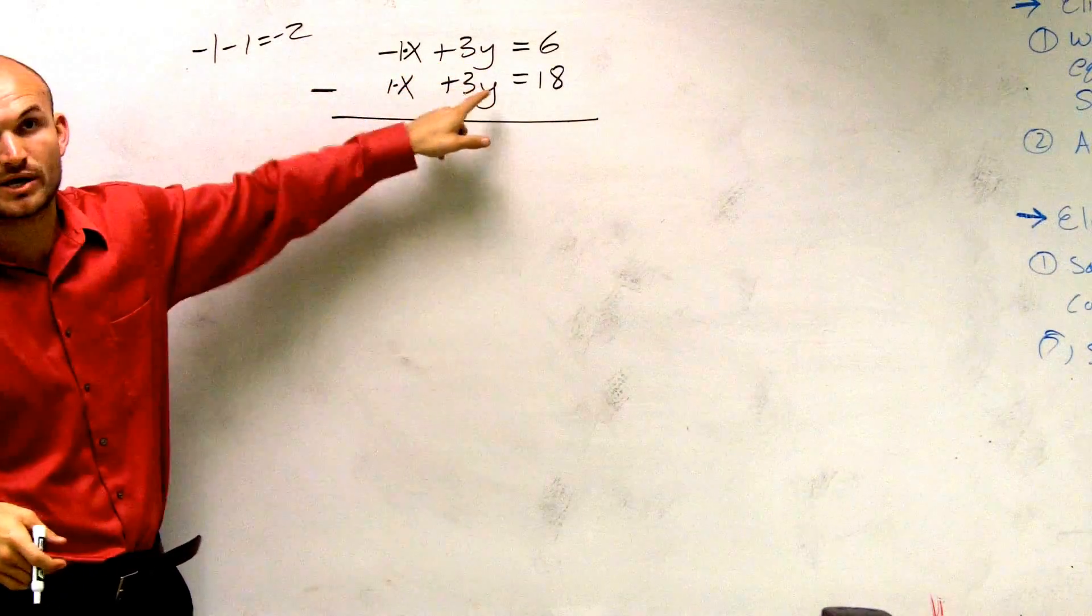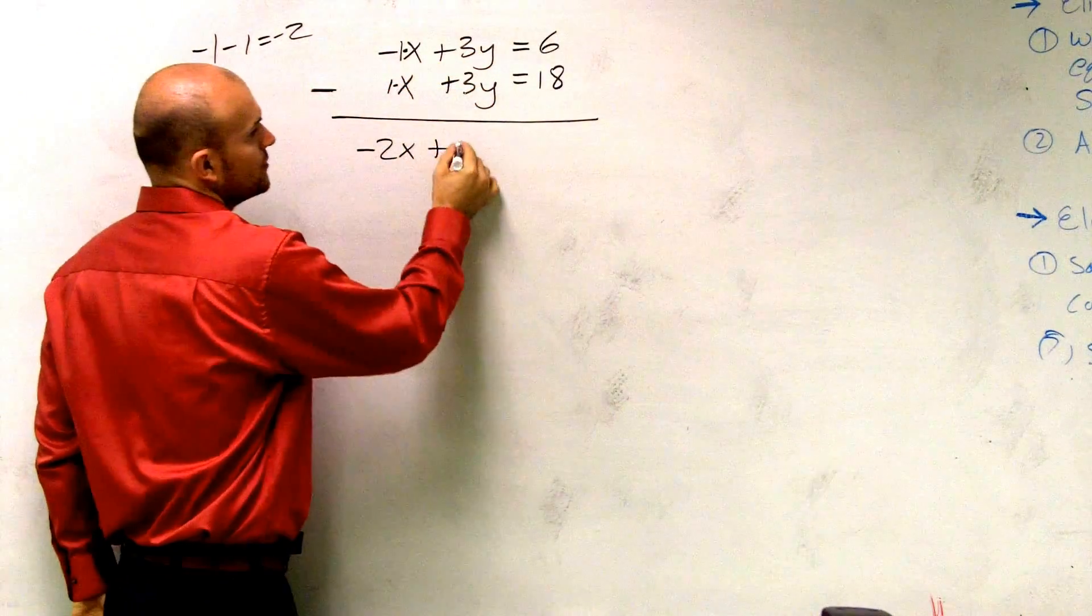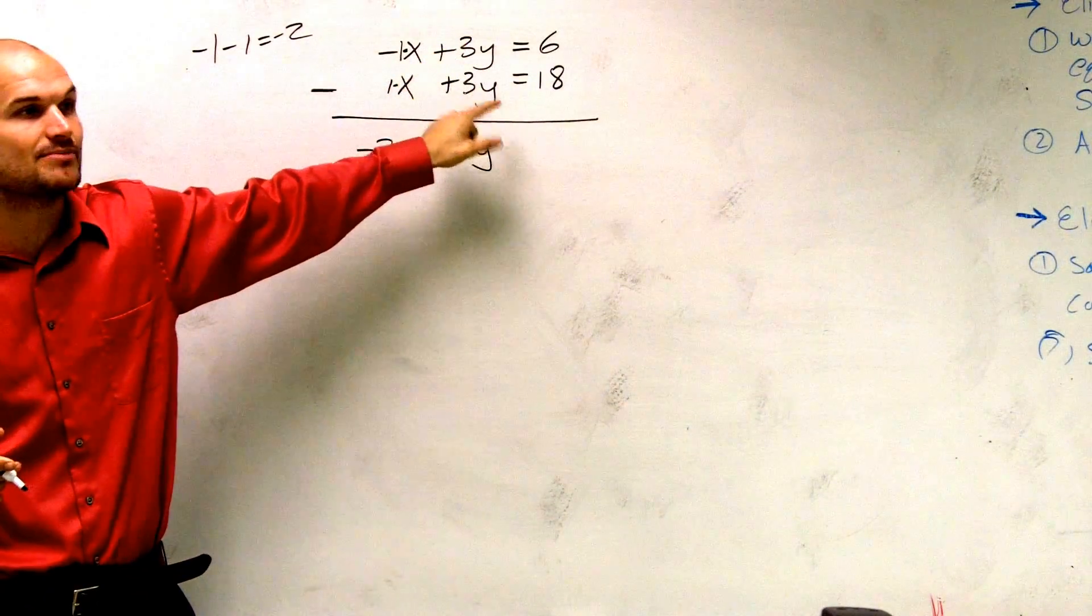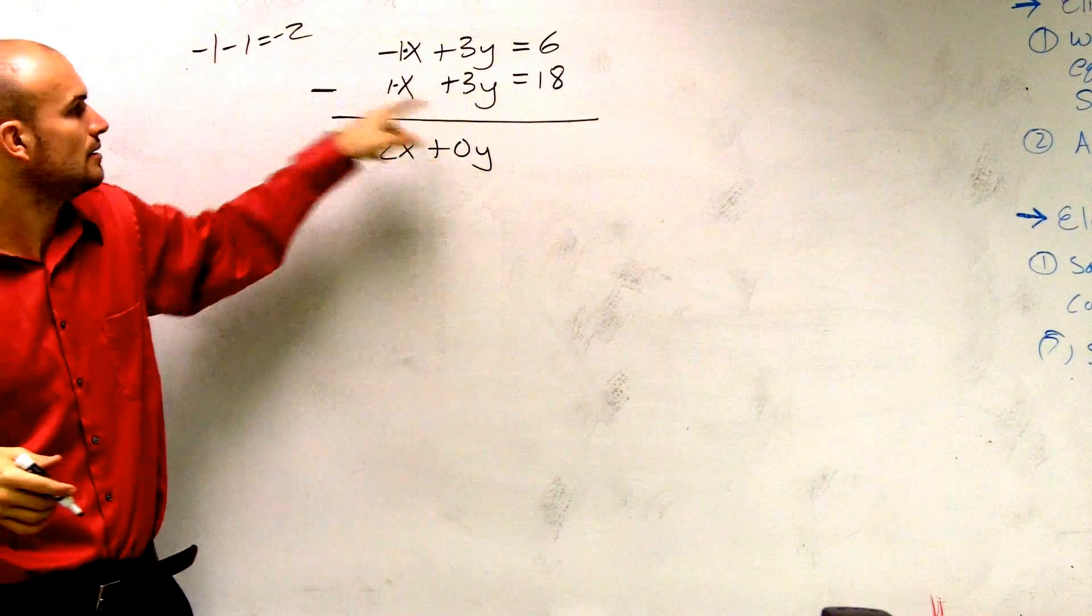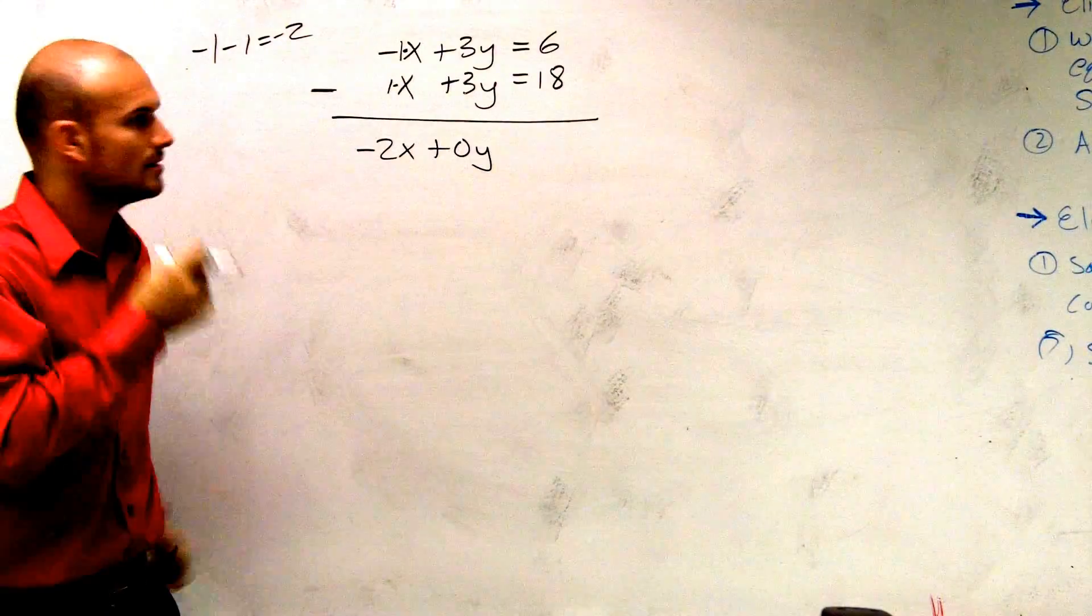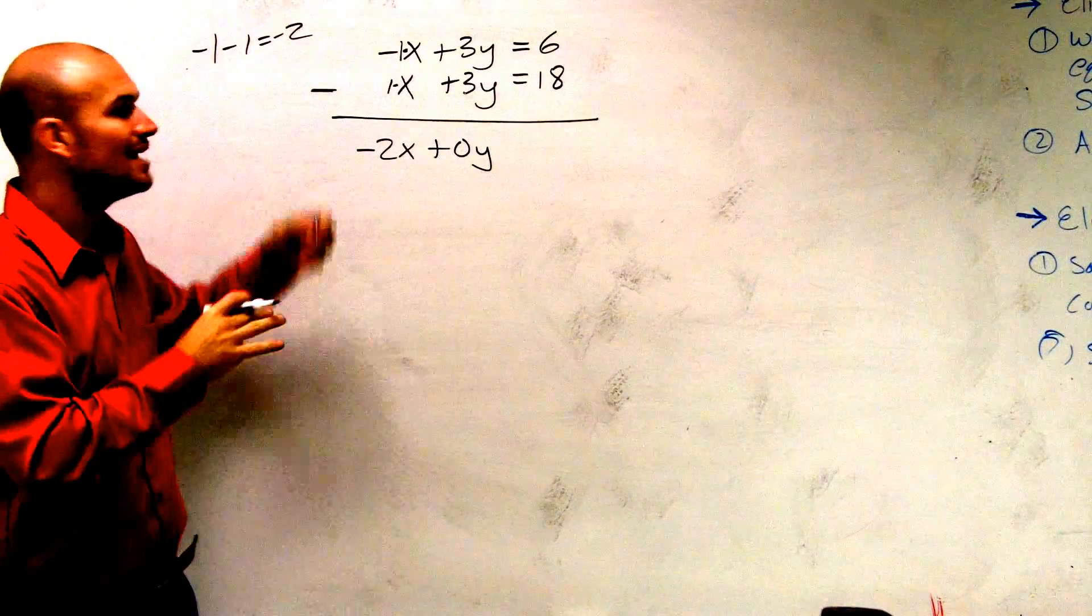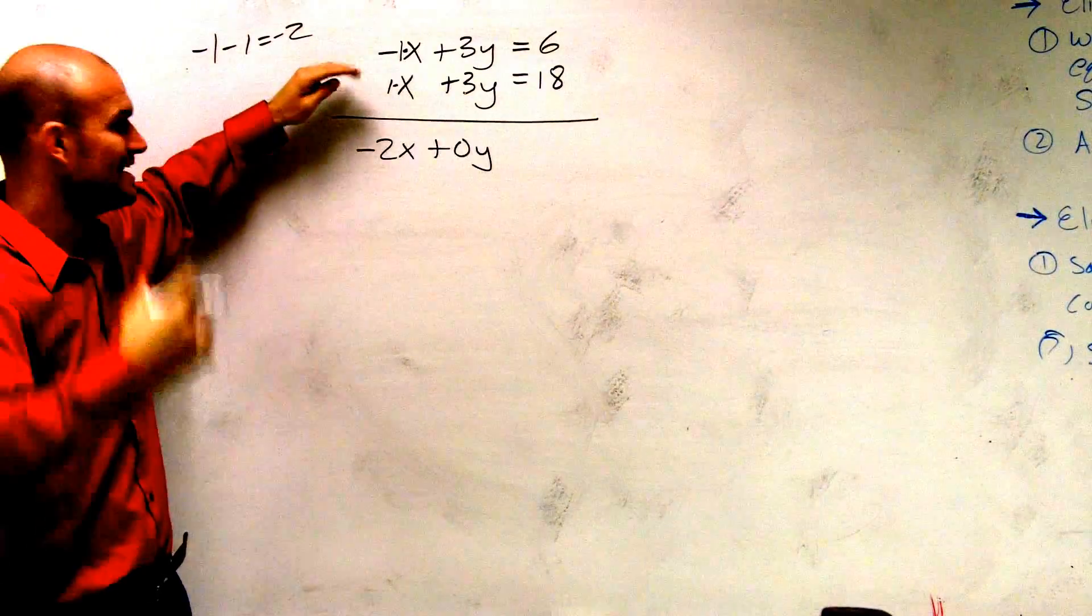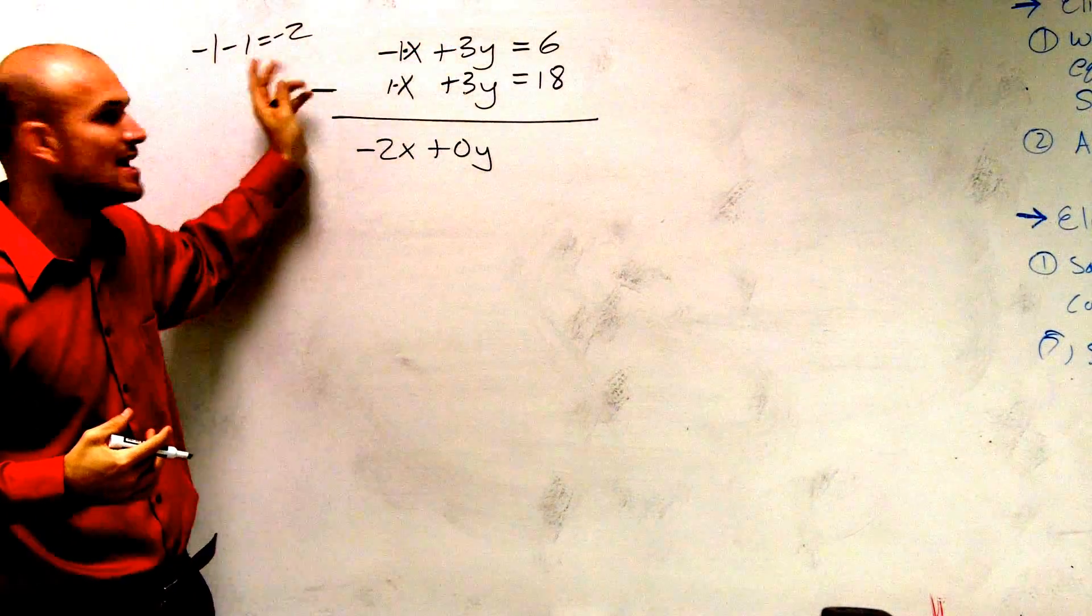3y minus 3y is now going to give you 0y. And that's why we wanted to use our elimination by subtraction. Why didn't you add those with the same sign? Remember, I was telling you, I told you before, you could use addition to solve this problem as well. But Vanessa asked me to do a problem by subtraction.